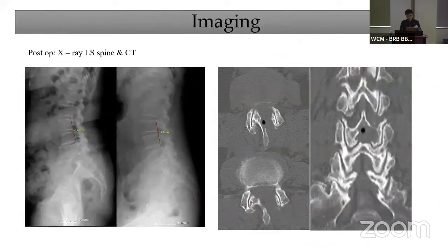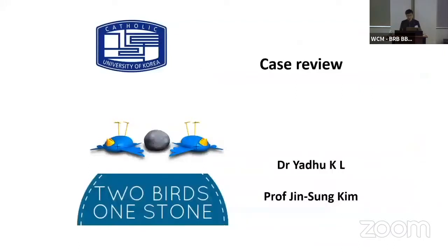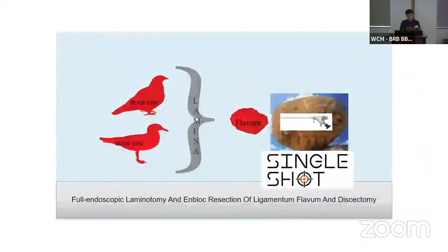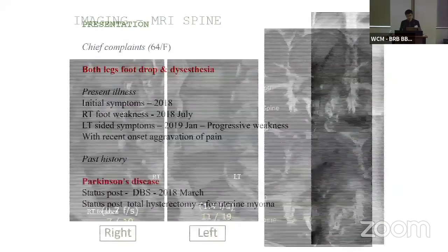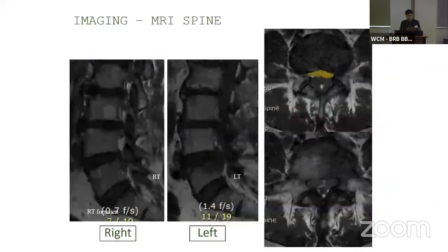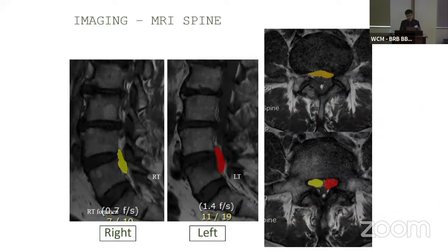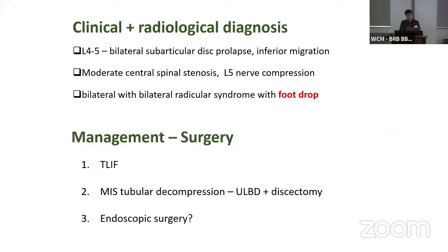You can see there is no aggravation of the spondylolisthesis. This is another case — the patient's x-ray shows degenerative spondylolisthesis, bilateral leg pain and weakness, with chief complaint of bilateral foot drop. It's a very complicated patient with Parkinson's disease and a history of DBS. MRI shows bilateral disc herniation, and the patient has underlying moderate spinal stenosis. Clinical and radiological diagnosis: L4-5 bilateral subarticular disc herniation, moderate spinal stenosis, and foot drop.